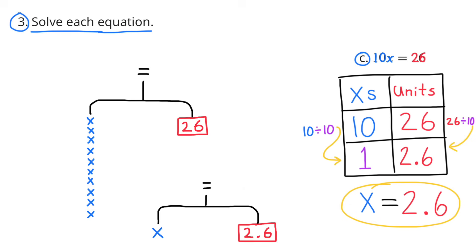C, 10x equals 26. So again, I have a table with the x's on the left side and the units on the right. 10x's divided by 10 equals 1x. Since I divided that column by 10, I have to divide the other column by 10. 26 divided by 10 equals 2 and 6 tenths. So 1x equals 2 and 6 tenths.